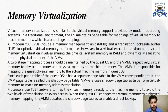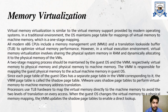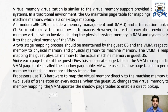Since each page table of the guest OS has a separate page in the VMM corresponding to it, the VMM page table is also called the shadow page table. VMware uses the shadow page table to perform virtual memory to machine memory address translation. Processors use TLB hardware to map virtual memory directly to machine memory to avoid two levels of translation on every access. When the guest OS changes the virtual-to-physical memory mapping, the VMM updates the shadow page table to enable direct lookup.